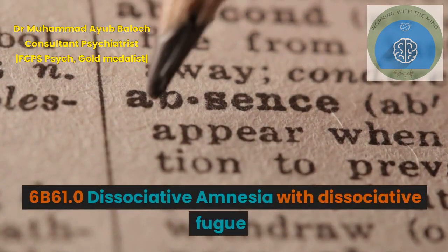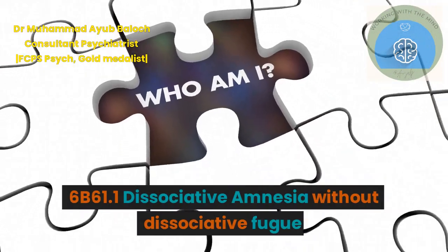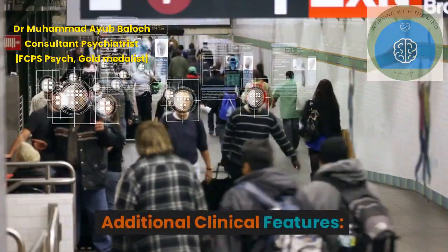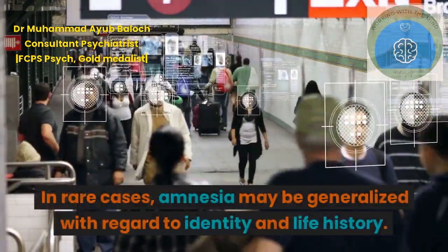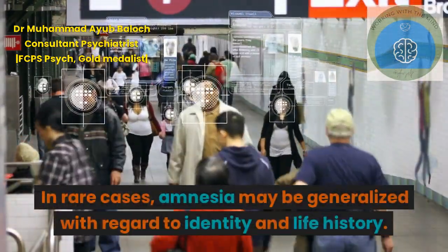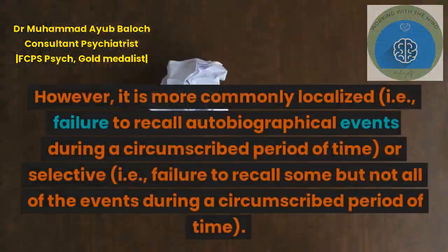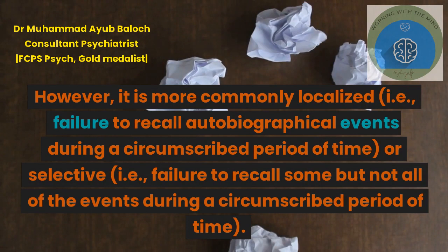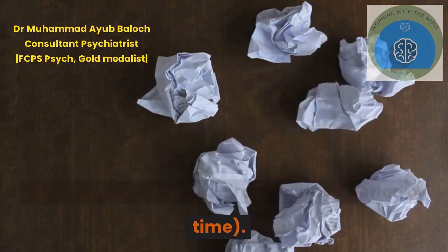6B61.0 Dissociative Amnesia with Dissociative Fugue. 6B61.1 Dissociative Amnesia without Dissociative Fugue. Additional Clinical Features: In rare cases, amnesia may be generalized with regard to identity and life history. However, it is more commonly localized — i.e., failure to recall autobiographical events during a circumscribed period of time — or selective, i.e., failure to recall some but not all of the events during a circumscribed period of time.